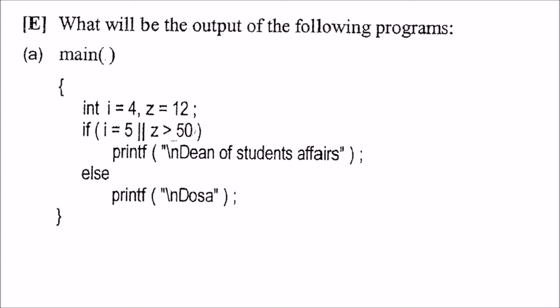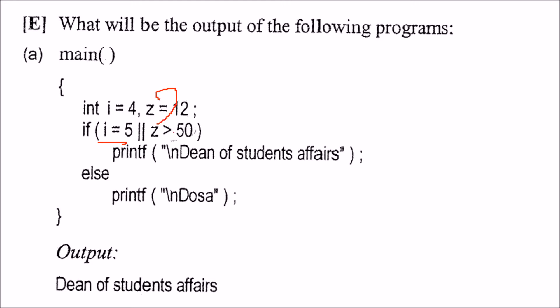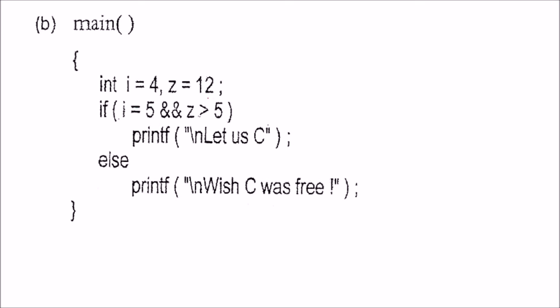What is the output? i equals 4, z equals 12. The assignment (i = something) and z greater than 50: z is 12 — 12 > 50 is false, but the assignment gives a non-zero value so that part is true. You get 'dean of student affairs'. Then i equals 4, z equals 12, i equals 5 (assignment — positive, non-zero, so true), and z > 5 means 12 > 5 is also true. With AND, both sides true means the condition is satisfied.